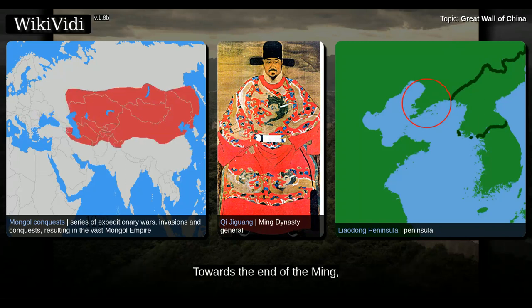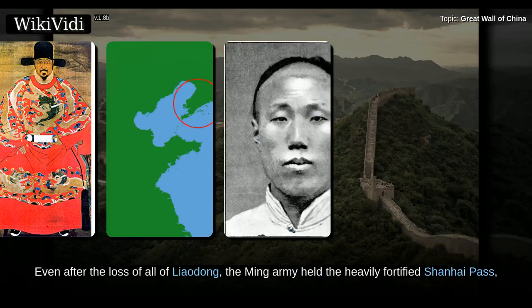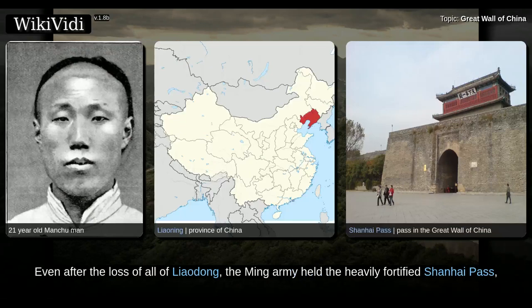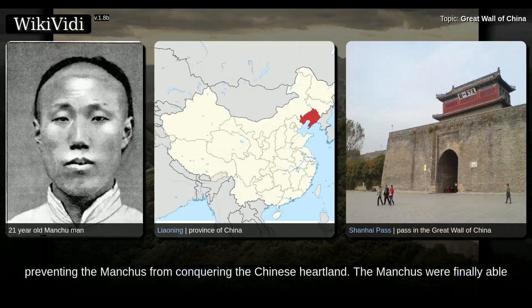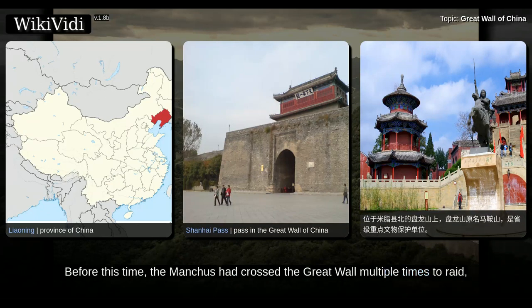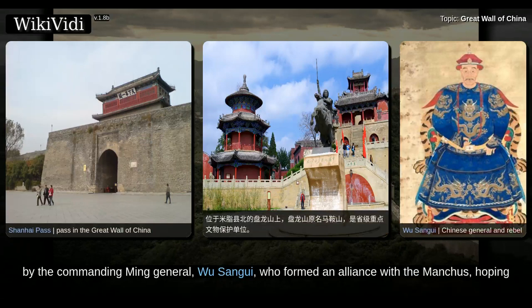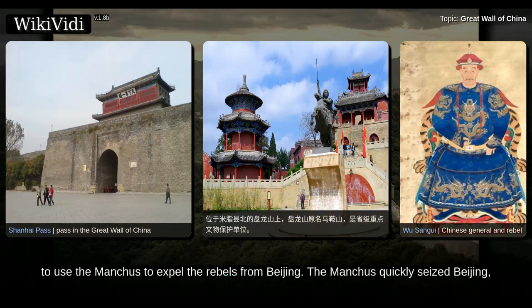Towards the end of the Ming, the Great Wall helped defend the empire against the Manchu invasions that began around 1600. Even after the loss of all of Liaodong, the Ming army held the heavily fortified Shanhai Pass, preventing the Manchus from conquering the Chinese heartland. The Manchus were finally able to cross the Great Wall in 1644, after Beijing had already fallen to Li Zicheng's rebels. The gates at Shanhai Pass were opened on May 25 by the commanding Ming general Wu Sangui, who formed an alliance with the Manchus, hoping to use them to expel the rebels from Beijing.